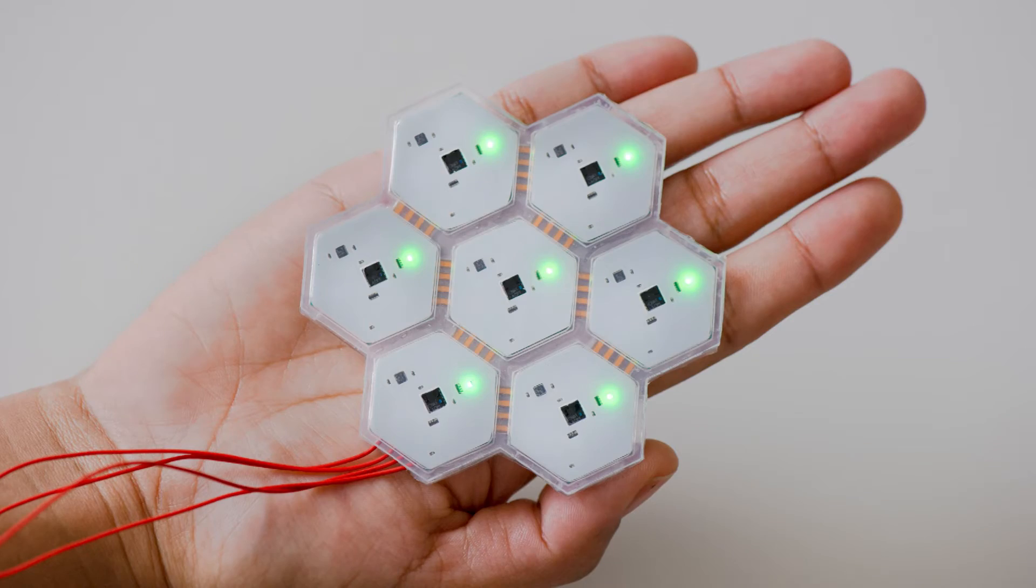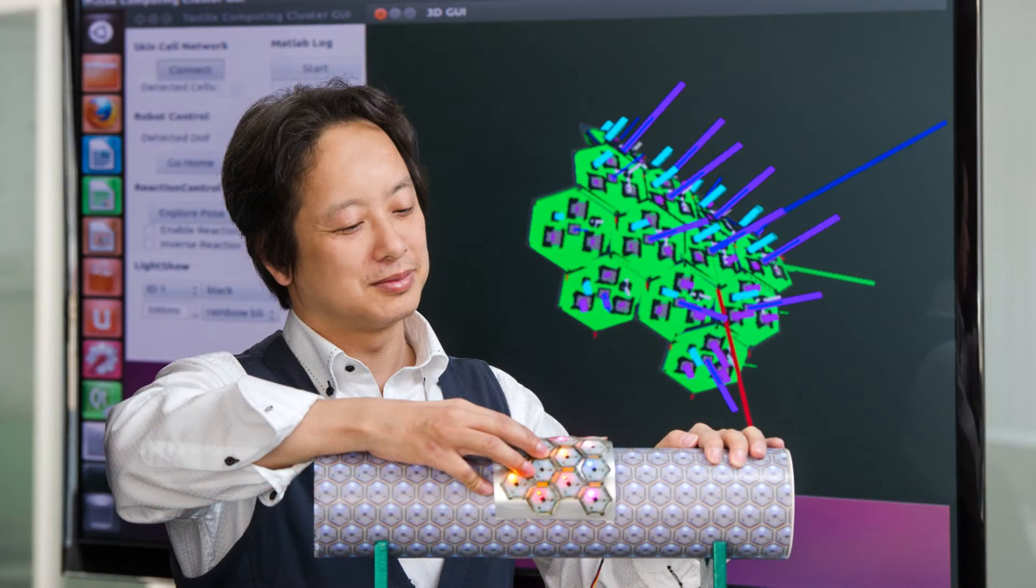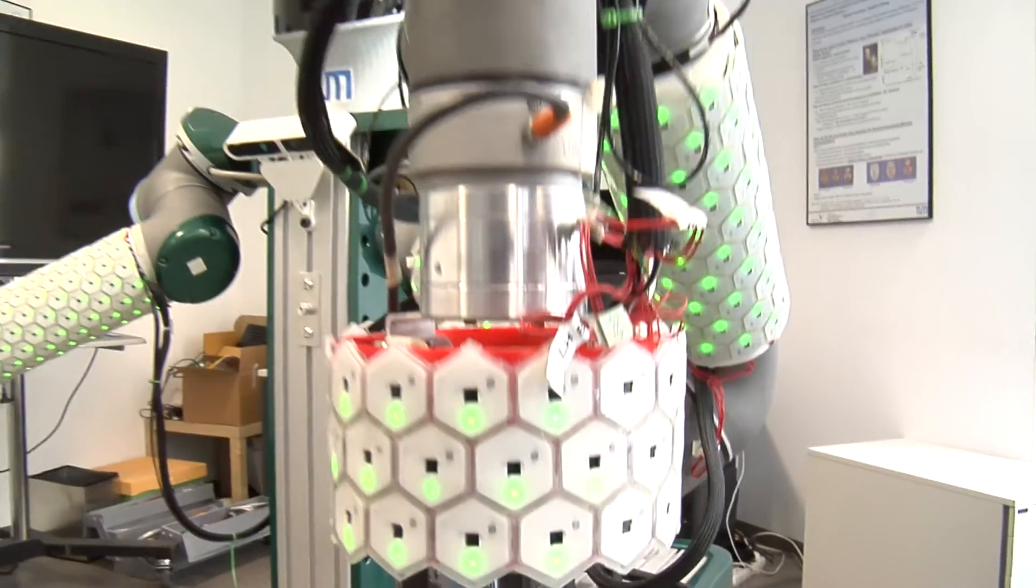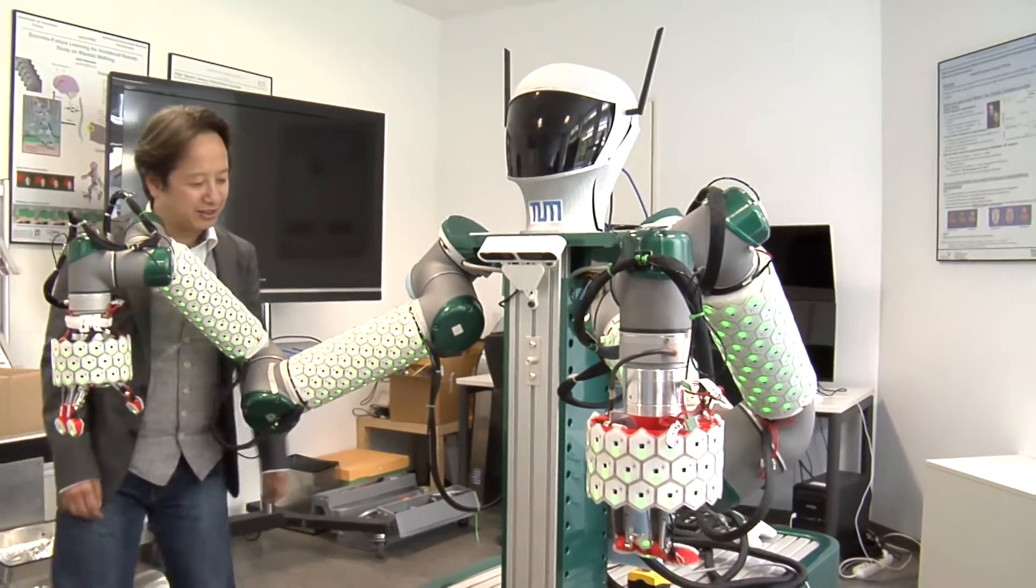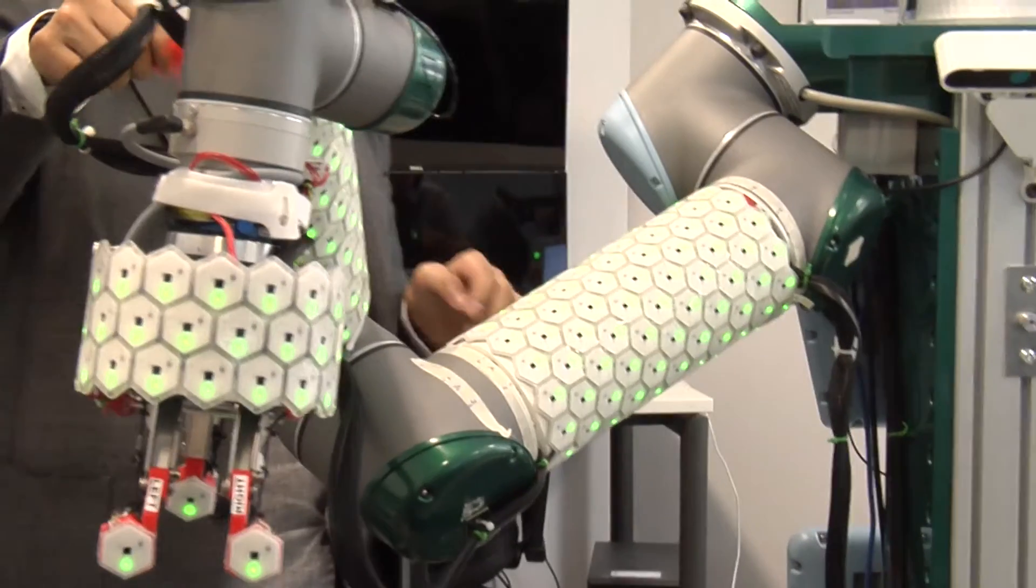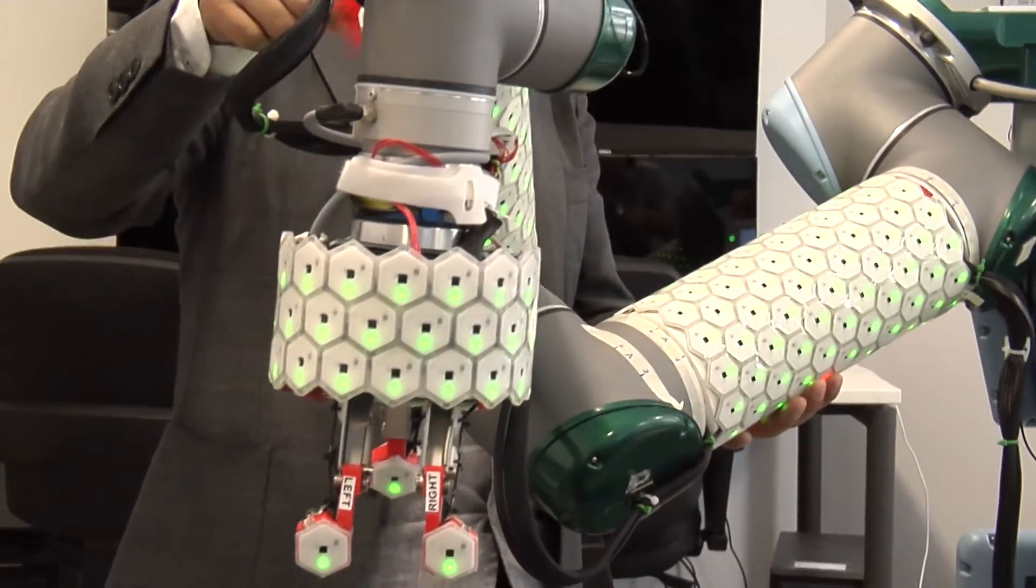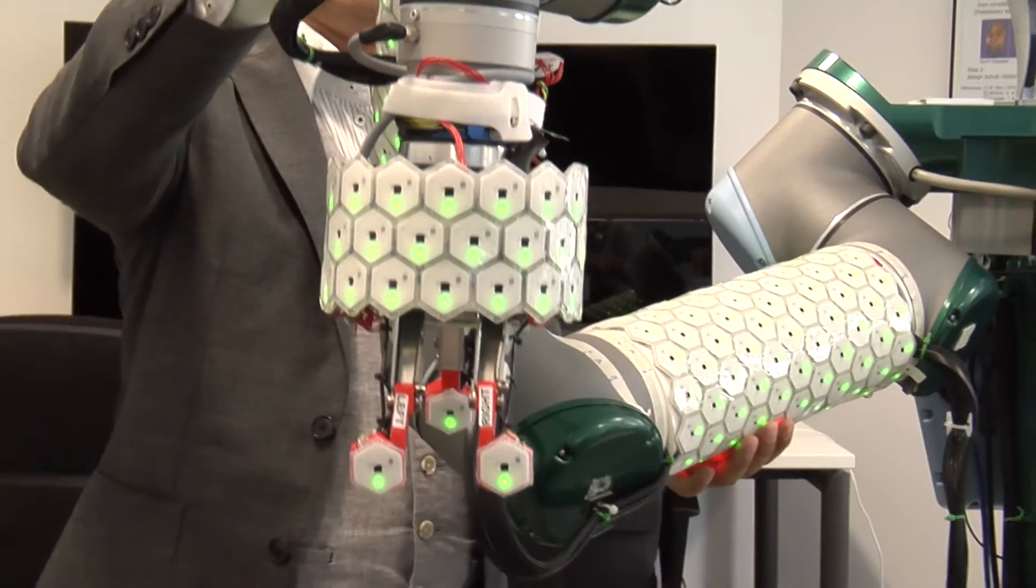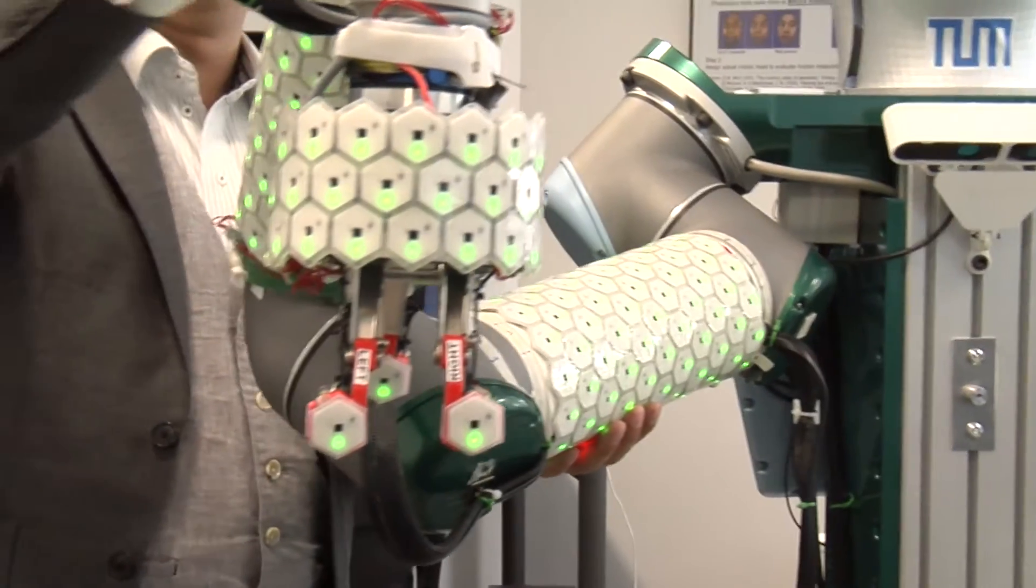So we constructed a new generation of artificial skin. This artificial skin can have pre-touch sensing and also touch sensing, and you can make a non-safe robot safe.